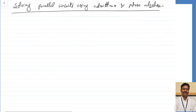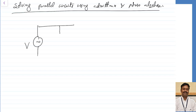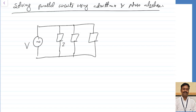I am going to use the admittance method. Taking a voltage source V, practically no element will be a pure resistor, pure inductor, or pure capacitor — always there will be combinations. I am representing unknowns as blocks with impedances Z1, Z2, Z3. The currents I1, I2, I3 flow through each block and total current is I. From this circuit, I is equal to I1 plus I2 plus I3.